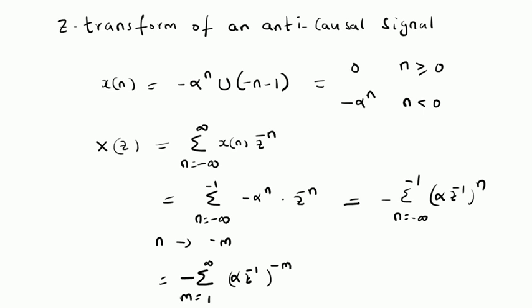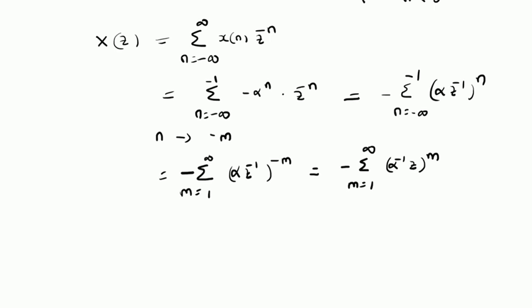We also have a minus here. This is equal to minus the summation from m = 1 to ∞ of (α⁻¹ · Z)^m, by sending the -1 into the base to get (α⁻¹Z)^m. By adding and subtracting 1, we can write this summation as 1 minus the summation from m = 0 to ∞ of (α⁻¹ · Z)^m.